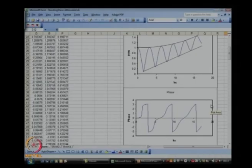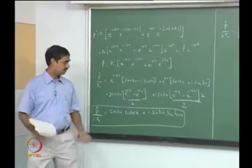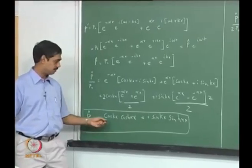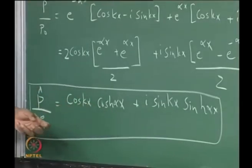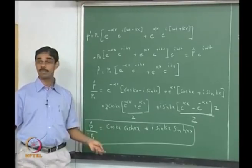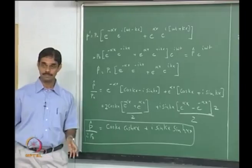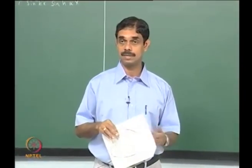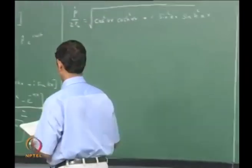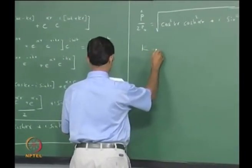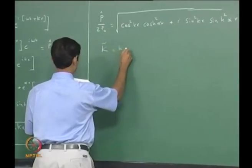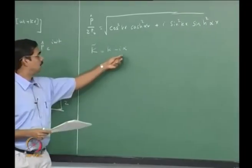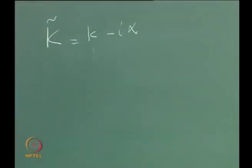The phase of this expression is tan inverse of sin(kx)*sinh(αx) divided by cos(kx)*cosh(αx), which simplifies to tan inverse of tan(kx)*tanh(αx). So you have an analytical formula. Alpha is the complex part of the wave number — that is what represents the attenuation.